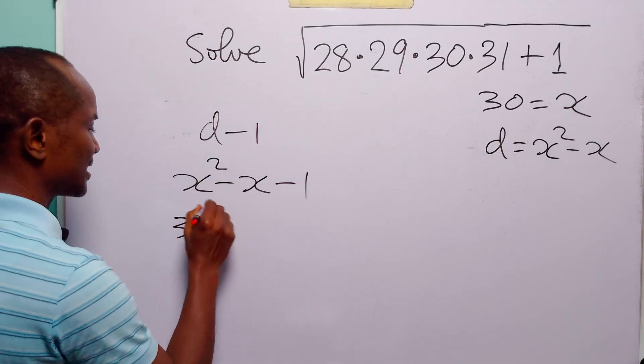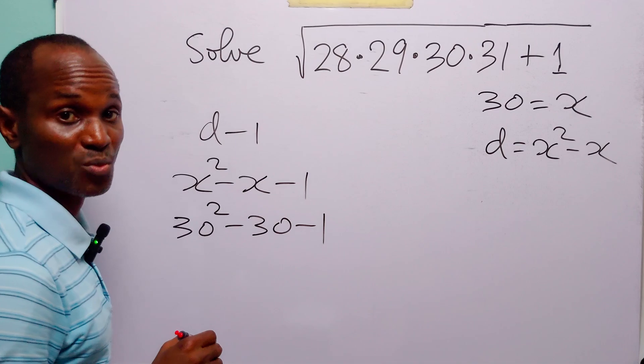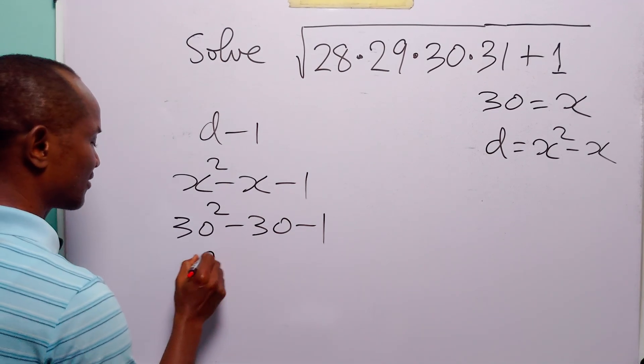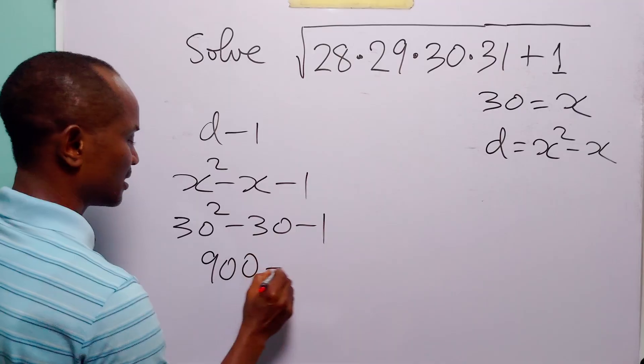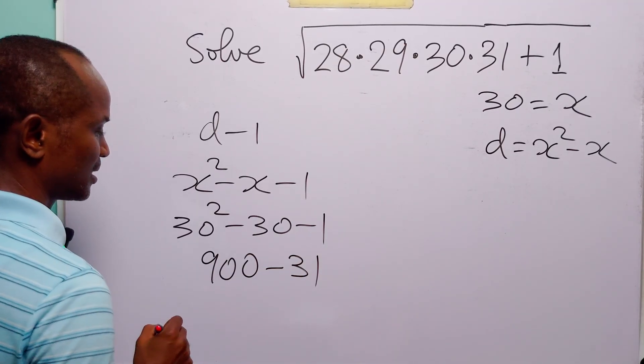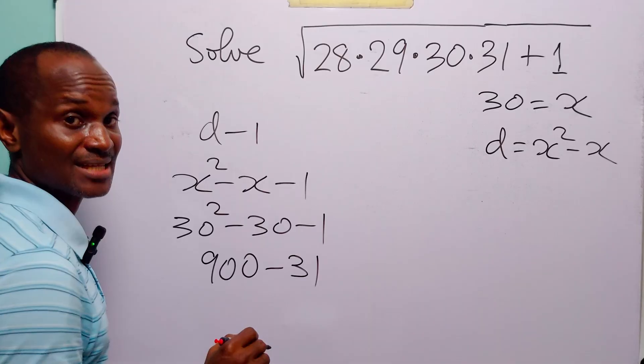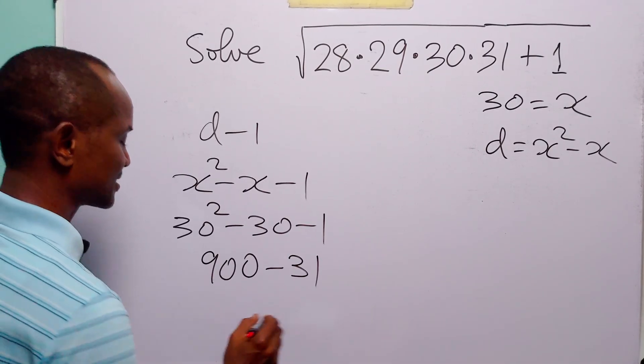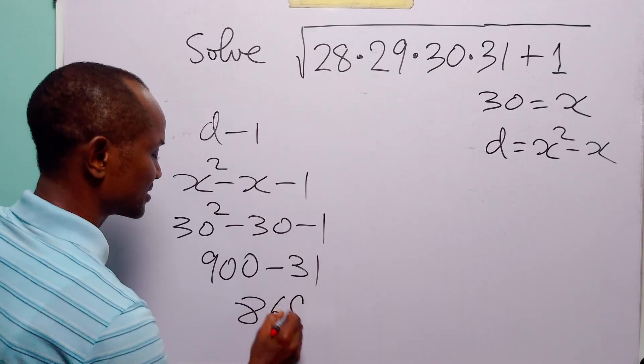So this is going to be 30 squared minus 30 minus 1. 30 squared is 900, so we have 900 minus 31. Now 900 minus 30 is 870. 870 minus 1 is 869.